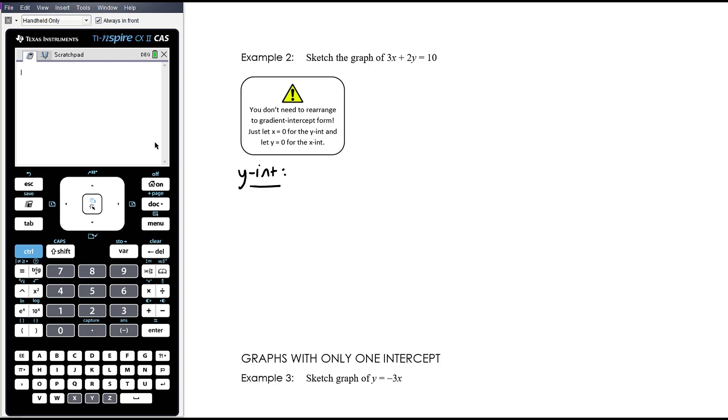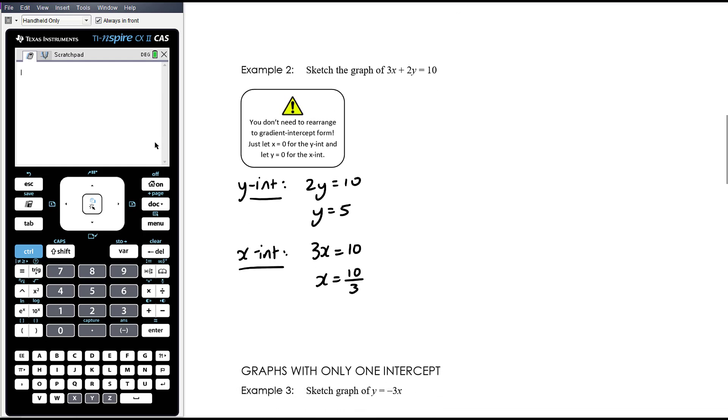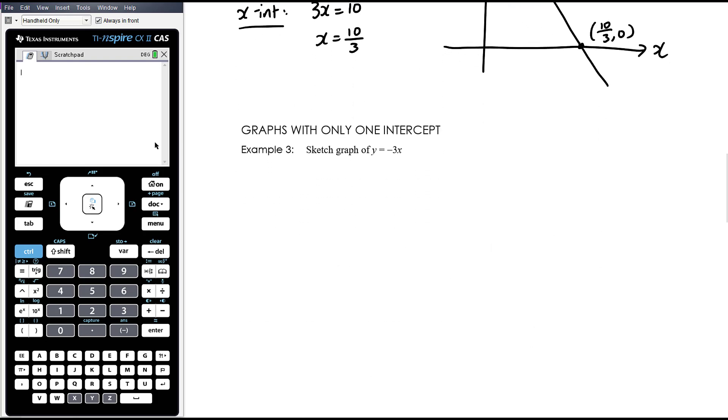Y intercept is when we let x equals zero, which means we just get 2y = 10, and so y equals five. X intercept is when we let y equals zero, which means we're going to get 3x = 10, so x equals 10 on 3. 10 on 3 is a fraction in simplest form, we don't need to do anything more than that. You might want to think about it as being three and one third just to get an idea of where it is. So we're going to have, think about where our axes are going to go, something like that. That's going to be 10 on 3, zero, and that's going to be zero five. If you're not very good at drawing a vaguely straight line by hand, use a ruler. Straight lines should be straight.